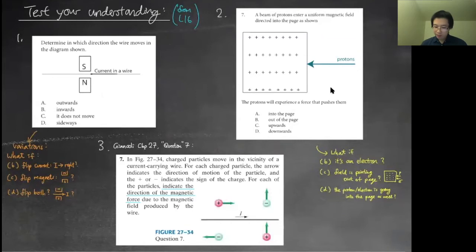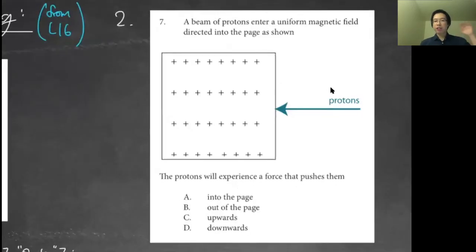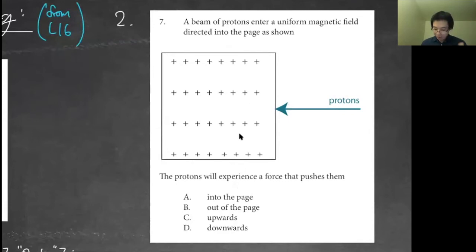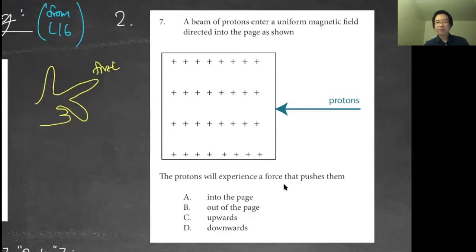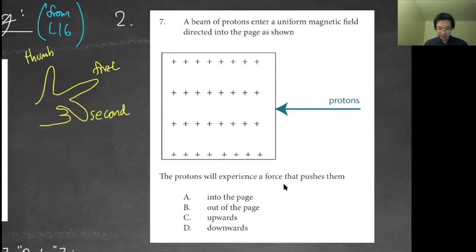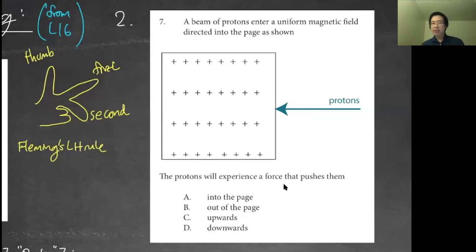Let's start with number two: a proton shooting through a magnetic field. If the symbol is a cross, imagine looking at the tail end of an arrow — so the magnetic field is going into the page. The proton is shooting in horizontally. There are two ways to find the force: Fleming's left-hand rule, or doing cross products.